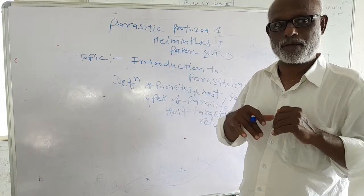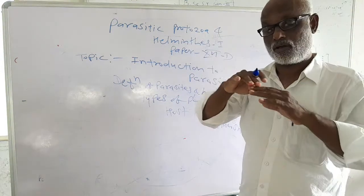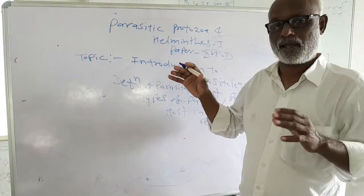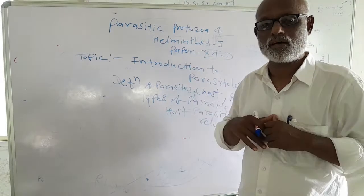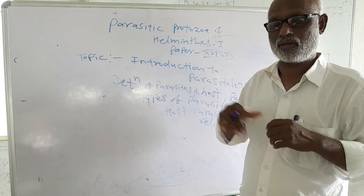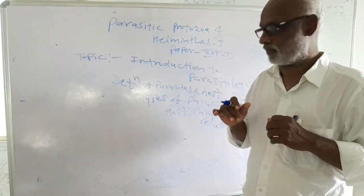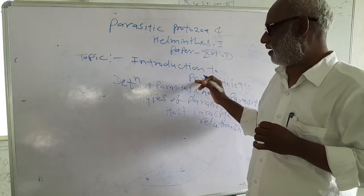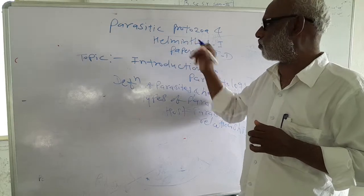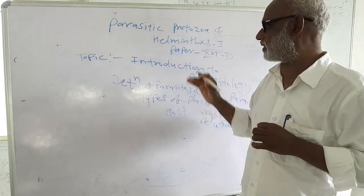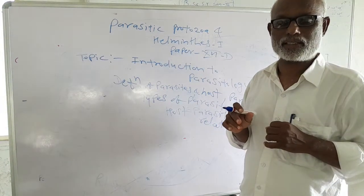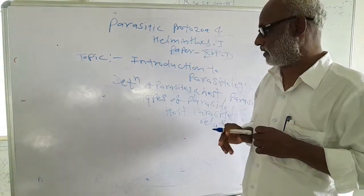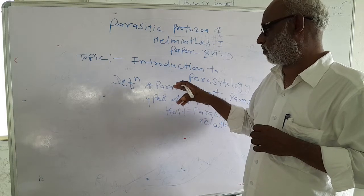There are two types of parasites: ectoparasites and endoparasites. Ectoparasites live on the body surface of the host, and endoparasites live inside the body of the host. In parasitology, we study protozoan parasites, platyhelminth parasites, and nematode helminth parasites.